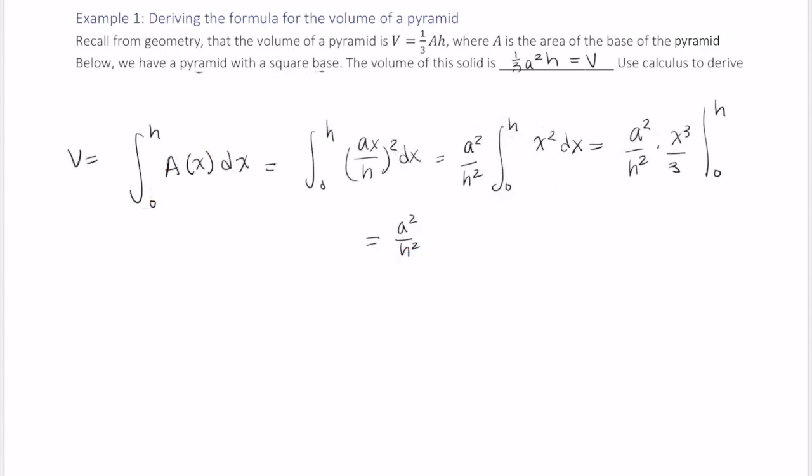This simply yields a squared over h squared times h cubed over 3, minus 0 cubed over 3, which when simplifying, we end up with a squared h cubed over 3h squared, or just a squared h over 3.